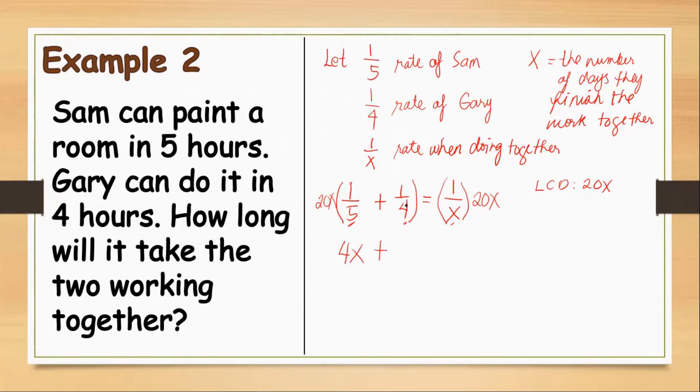So we'll have this 20 and 5. So if we cancel 5 and 20, we get 4. So 4X times 1, we get 4X. Plus, if we cancel 4 here, 20 over 4 is 5X. So 5X times 1, that is 5X. Equals, when we cancel X here, we get 1 times 20, or that's equal to 20. So if we are going to solve this together and simplify this, we get 9X. 4 plus 5X is 9X. Equals 20. Then, divide both sides by 9.